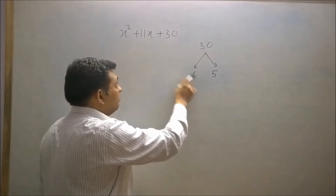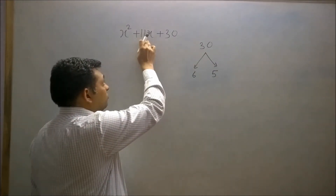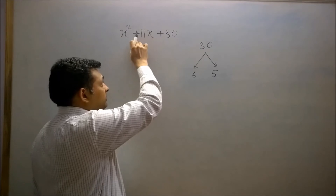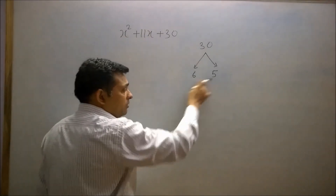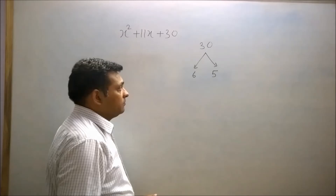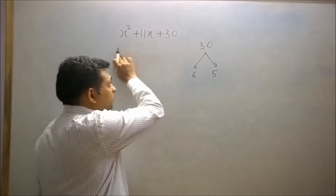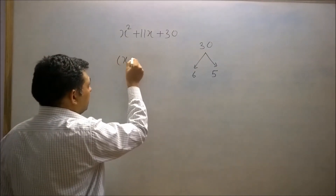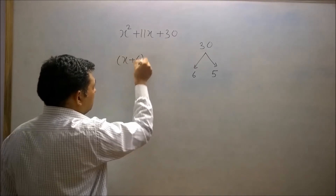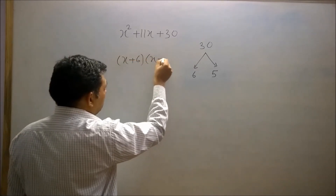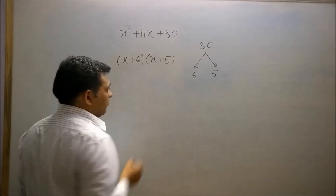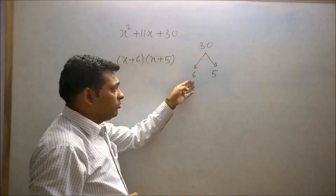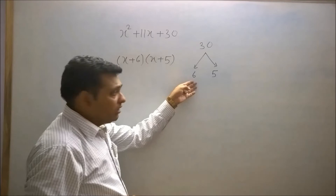The sign of these two factors will be the same as the sign of the coefficient of x. Here the coefficient of x is positive, so both numbers will be positive. So the factors of this polynomial are (x + 6)(x + 5).